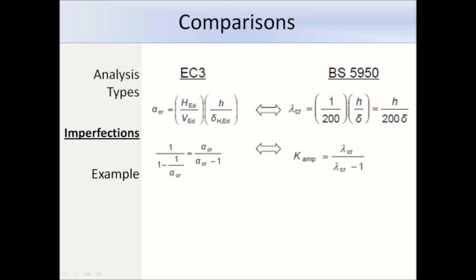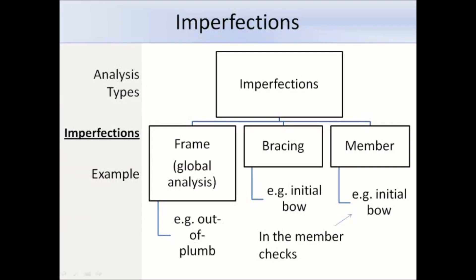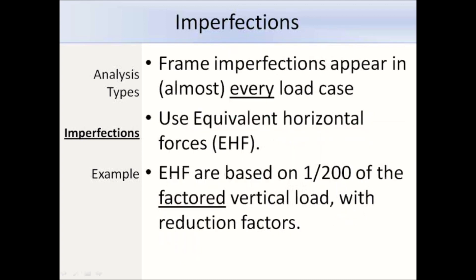I've finished covering the different types of analysis and now I'm going to talk about imperfections. There are three types of imperfections we are interested in. Frames will always be out of plumb by a small amount, meaning any vertical loads applied will become eccentric to the bases. Bracing, including trusses, will never be perfect and can have initial bow imperfections. Members will never be perfectly straight and will also have initial bow imperfections; however, the member resistance checks allow for initial imperfections so you shouldn't worry too much about those. We can use equivalent horizontal forces, which are relatively familiar because they are based on 1 over 200 of the factored vertical load with reduction factors.